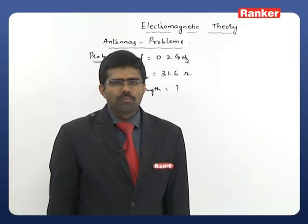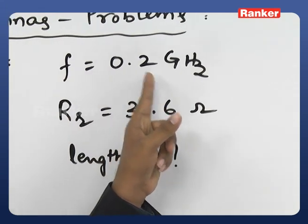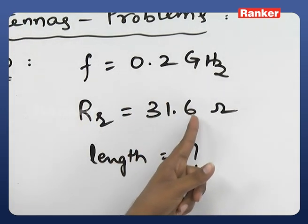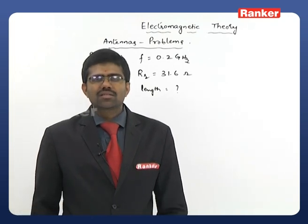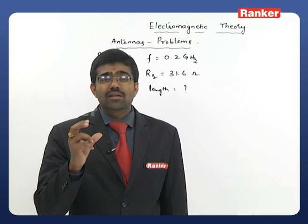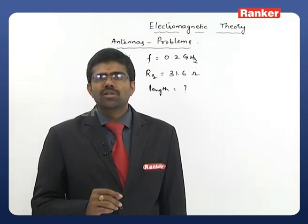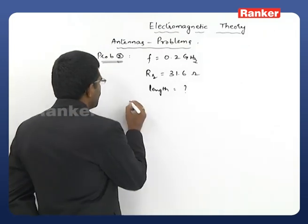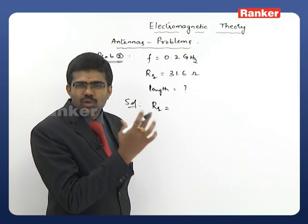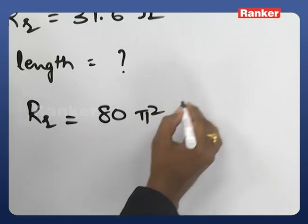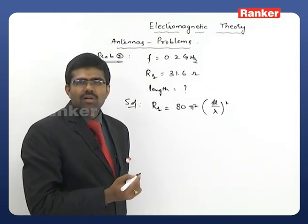The radiation resistance formula for a Hertzian dipole is Rr = 80π²(dL/λ)². Radiation resistance is a hypothetical resistance that delivers the same power as the antenna. Substituting 31.6 = 80π²(dL/λ)², rearranging gives dL² = 31.6λ²/(80π²).